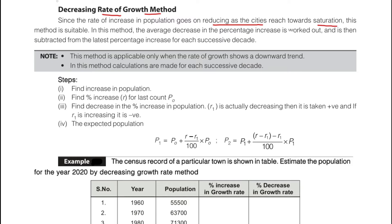This method is suitable only for a decreasing growth rate. It is applicable only when the rate of growth shows a downward trend. The population is still increasing, but the percentage growth will be decreasing. In this method, calculations are made from successive decades — every decade we have to calculate the population growth.